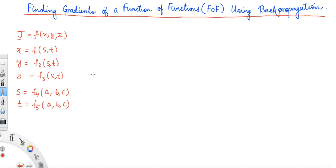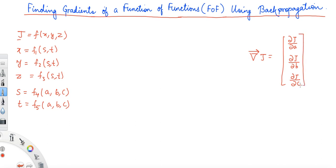In order to find the gradient — and by the way, the gradient vector we have already studied — the gradient vector ∂J is equal to [∂J/∂a, ∂J/∂b, ∂J/∂c]. This is how we define the gradient vector, and often we need to find this gradient vector in order to update parameters a, b, and c.